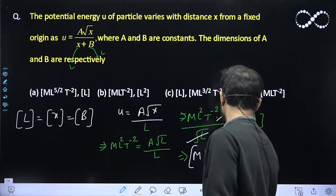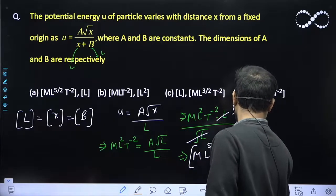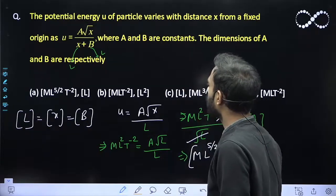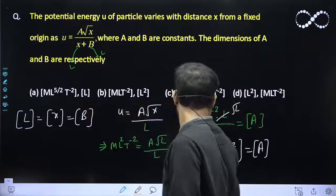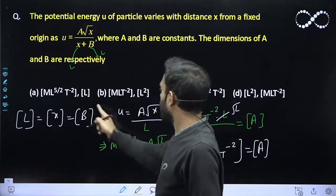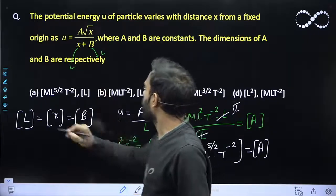This will be the dimension of A here. The dimension of A you got this, dimension of B you got this. Let us see which option is matching. M L^(5/2) T⁻², that is correct, and B is having the dimension of L. So option A is matching.